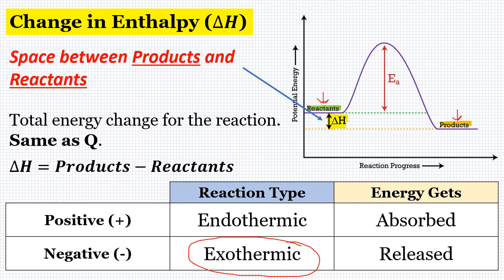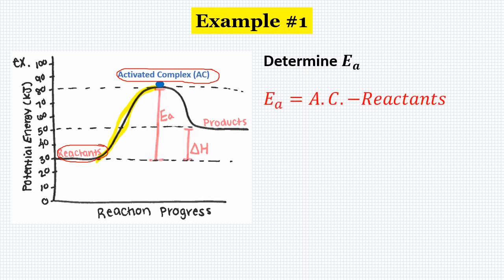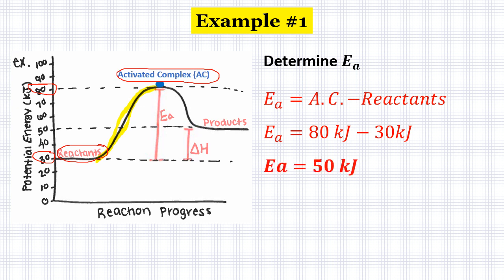Let's look at a couple of examples with some actual numbers. In this example, everything is already labeled on our diagram. The first part asks us to find the activation energy, which is the total amount of energy between the reactants and the activated complex — the transition state. Activation energy is found by taking the difference in energy between the activated complex and the reactants. On the diagram, the activated complex is at 80 and the reactants are at 30, so 80 minus 30 gives us an activation energy of 50 kilojoules.